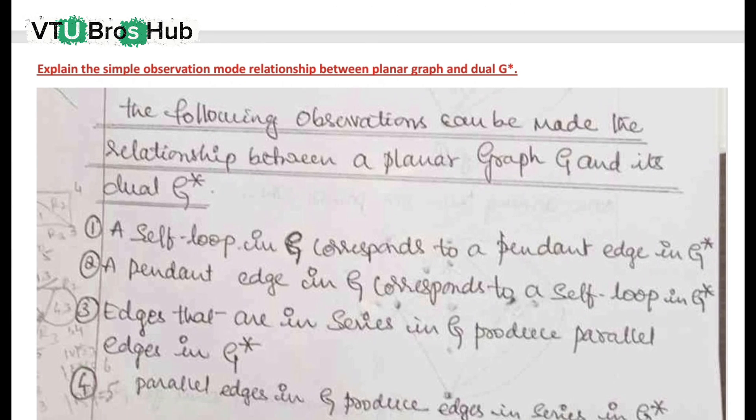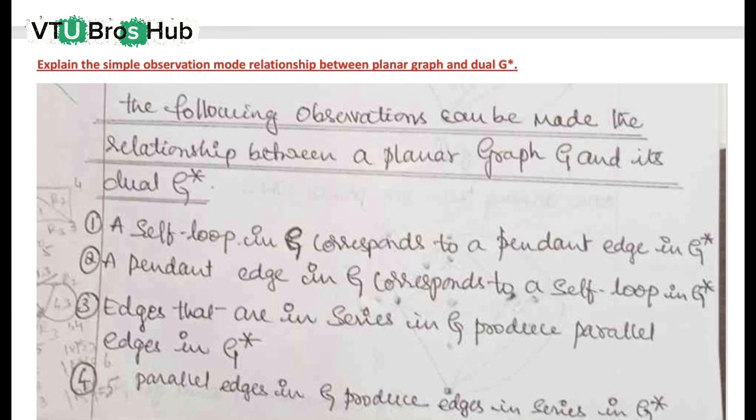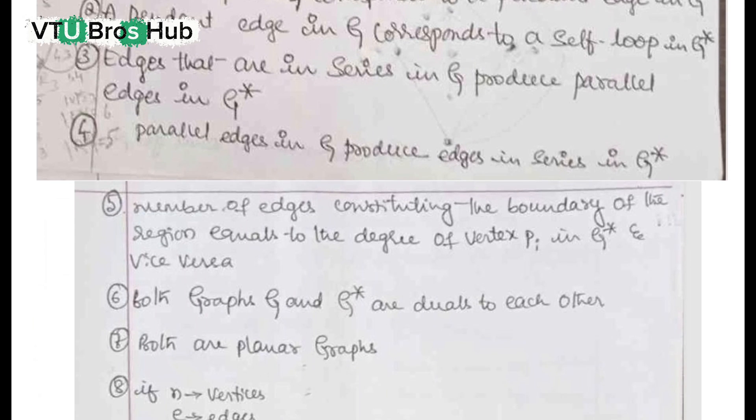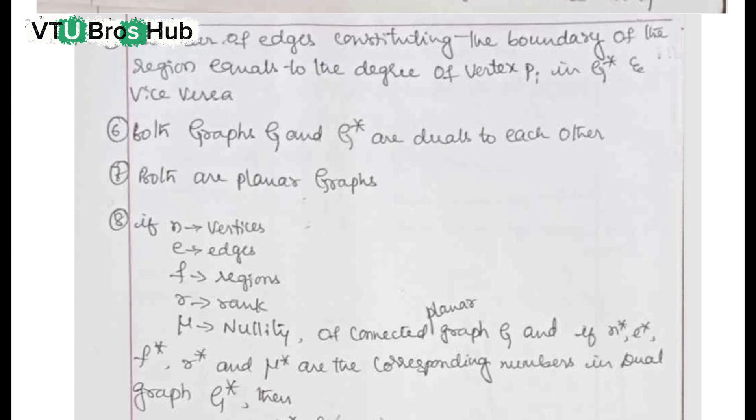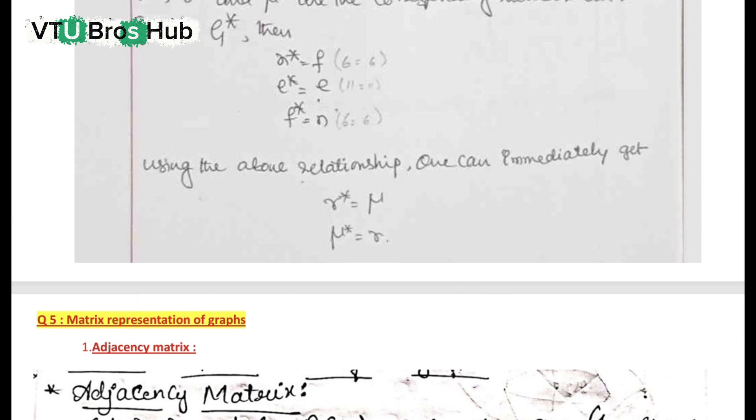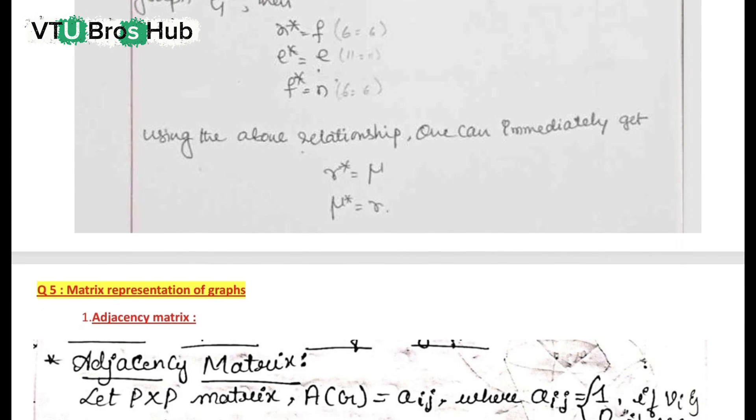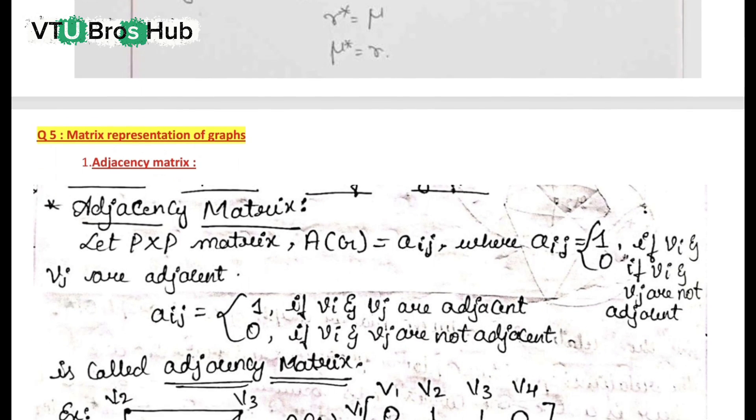Question 4 continued: G and G star relationship. The dual graph G star has the same number of edges as the original graph. Also, the number of vertices in G star equals the number of regions in G. This relationship is well shown in the diagrams now.